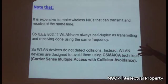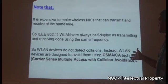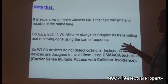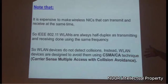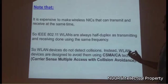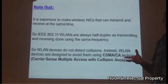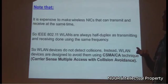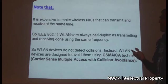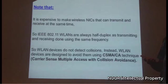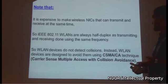WLAN devices don't detect collisions, but avoid them using the CSMA/CA technique. The basic operation is: when any station needs to transmit a data stream, it first senses the RF medium. If it is busy, it waits a random time. After that random time ends, it senses again — if the medium is free, it will transmit.